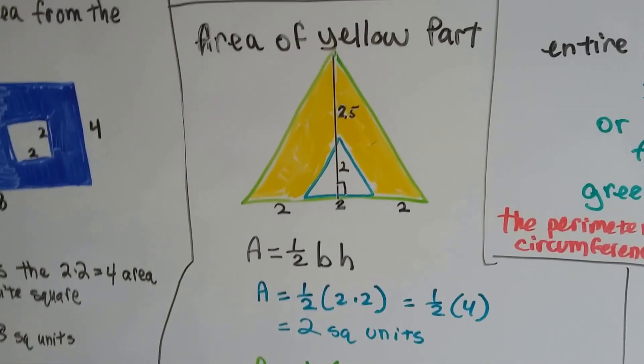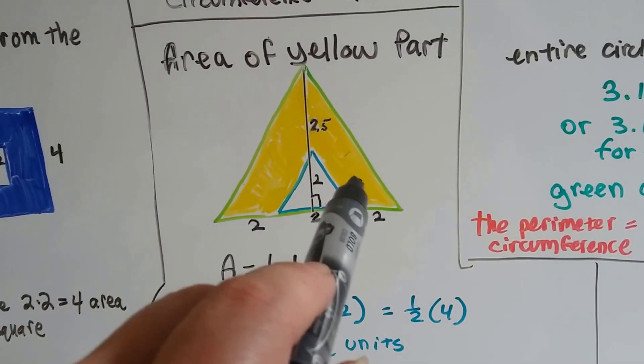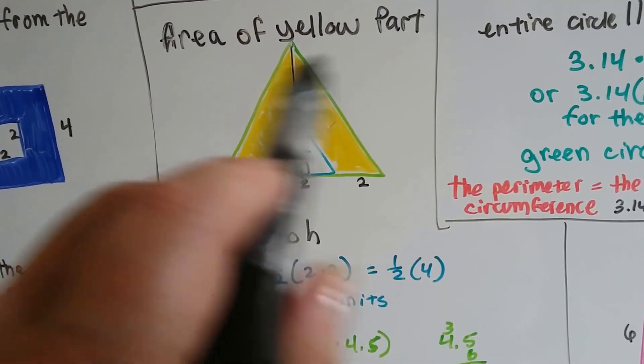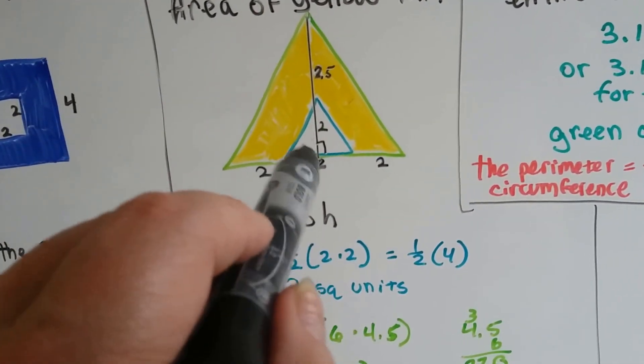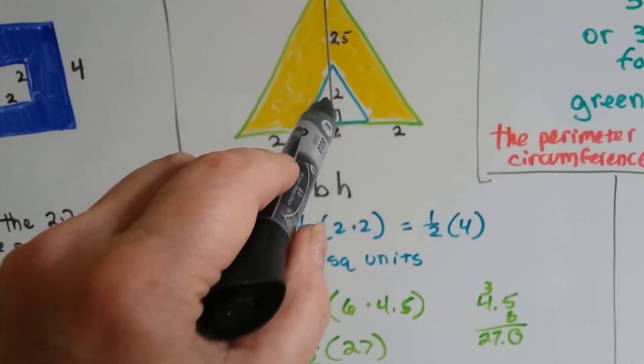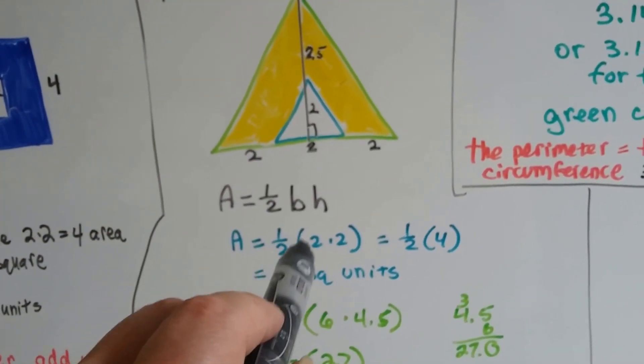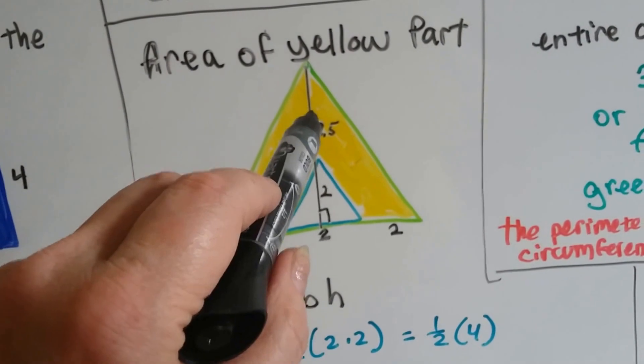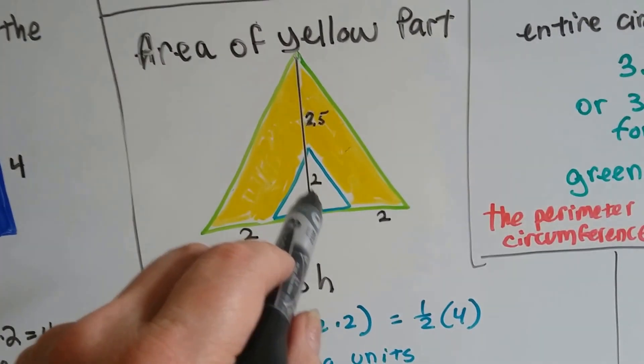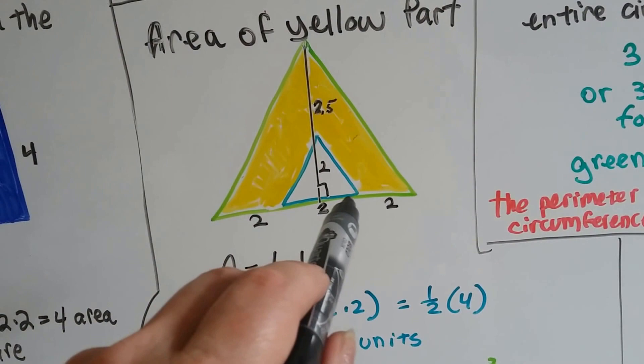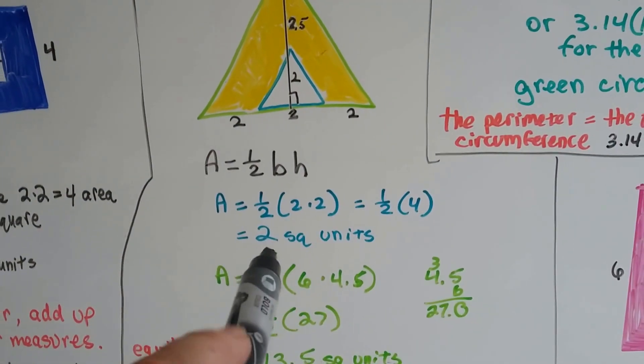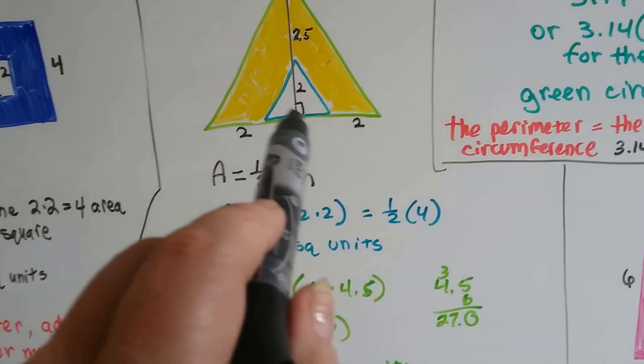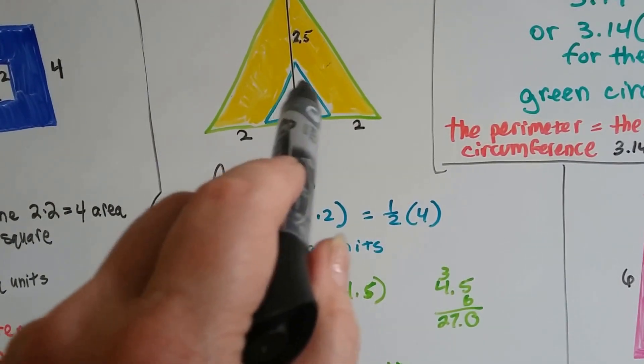Now we've got two triangles, and if we need to find the area of the yellow part, what we do is, we find the area for the entire thing and subtract the area of the littler one from it. So, the littler teal and white guy, it's half times base times height. It's got a height of 2, but the whole thing has a height of 2 plus 2.5, so that's 4.5. But, just the little teal and white guy is 2, and its base is 2. So, we do our math, and we plug it into the formula, and we get that half times 4 is the area, or 2 square units is the area of this one.